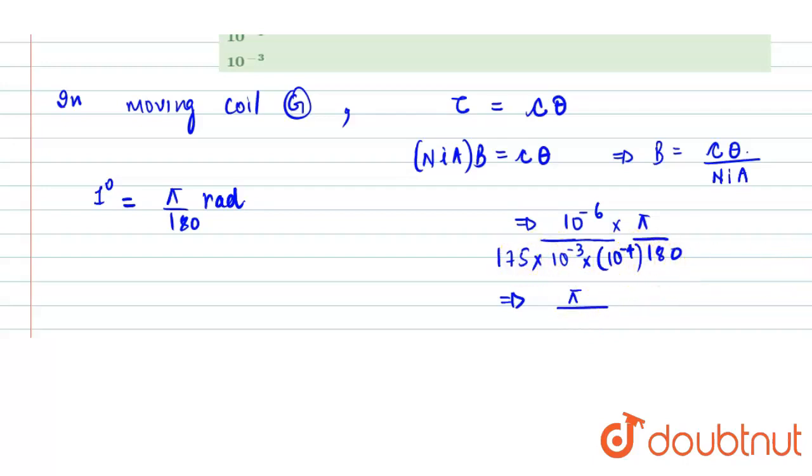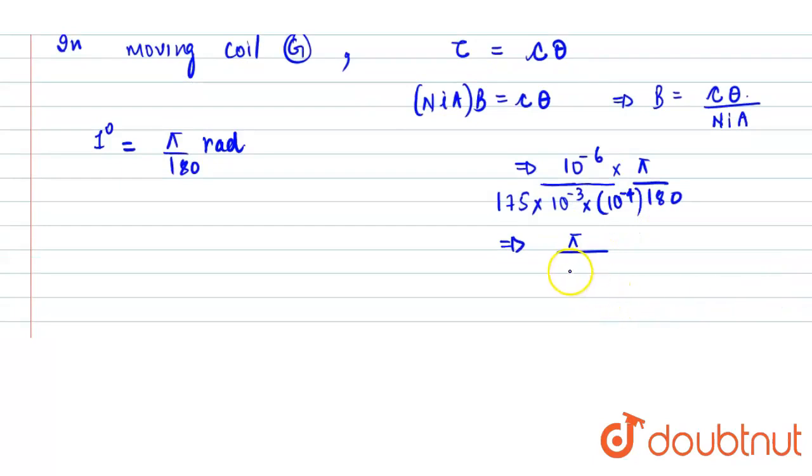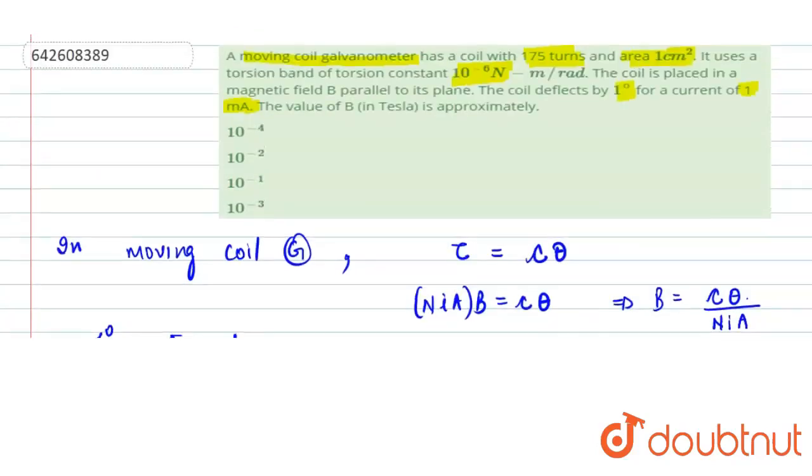So this becomes 3150, nearly. We can write it as 10 to the power minus 3. This is the magnetic field. So unit would be, it's an SI unit, so it is 10 minus 3 tesla. So accordingly we can choose option D.